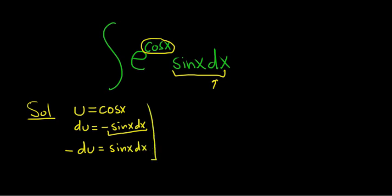All right, good stuff. So now we're ready to do this. Let's replace sine x, dx with negative du. We can pull out the negative, so we have negative du, and what's left is simply e to the u.